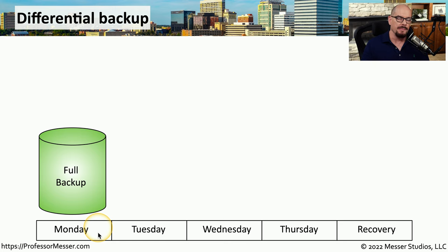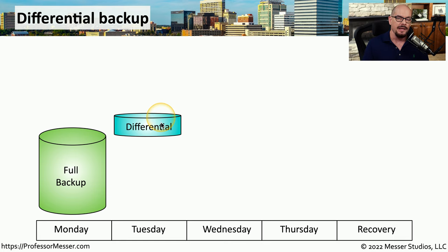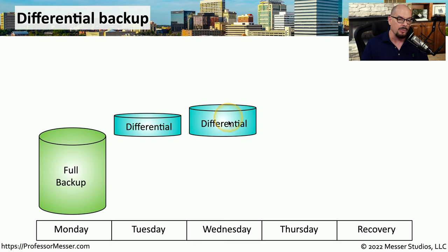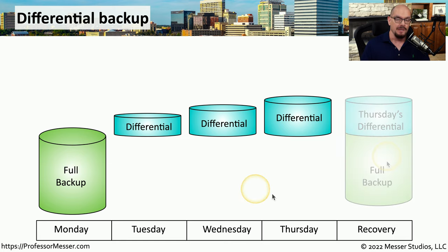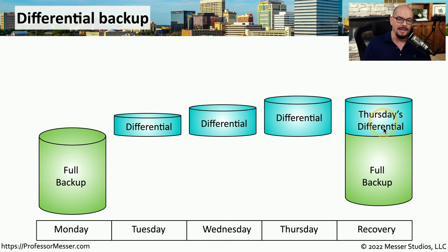Let's implement a differential backup on a network. We'll first start on early Monday morning and create a full backup of all of the data on a system. We'll then perform a differential backup on Tuesday morning, which would only be the data that has changed since the last full backup. We'll then perform another differential backup on Wednesday, which contains only data changed since the full backup on Monday. Then Thursday, we perform the same differential — again, only the data changed since the last full backup. Now if the system suddenly crashes and we need to restore all of this data, we'll grab the last full backup from Monday and the last differential backup from Thursday. Put those together and we've recovered all of the data on our system.